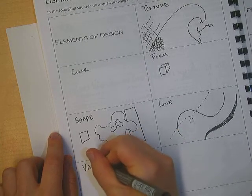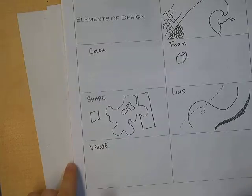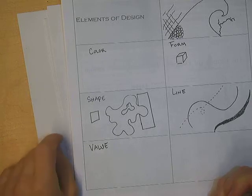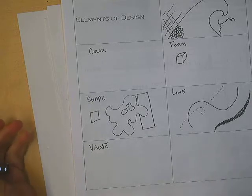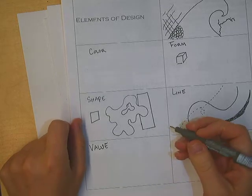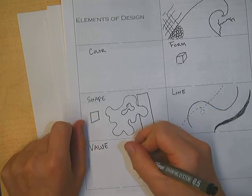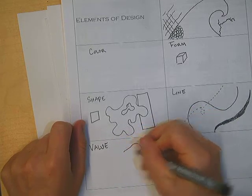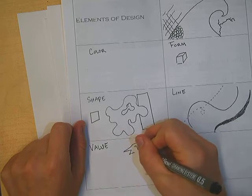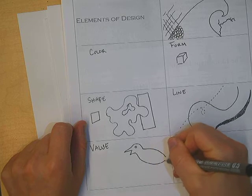There is also value as an element of art. So remember, value is how light or dark something is. We talked about value with the grid assignment. So how can I create an image that has dark values, gray values, and light values? I can use a pencil for this. I can use a pen. I'm trying to decide what to do with this. Maybe I'll draw a bird that has different values.